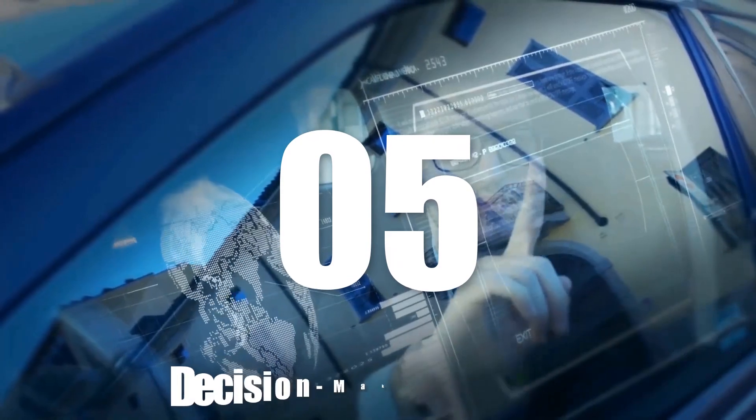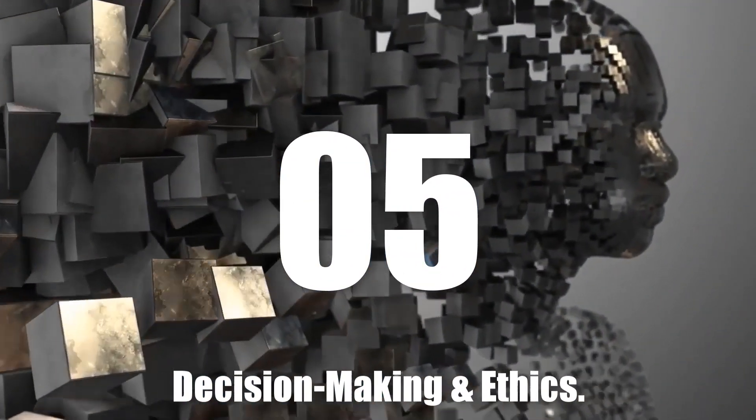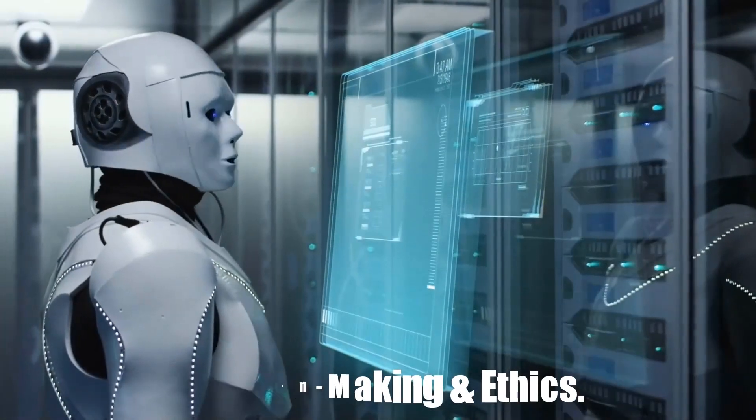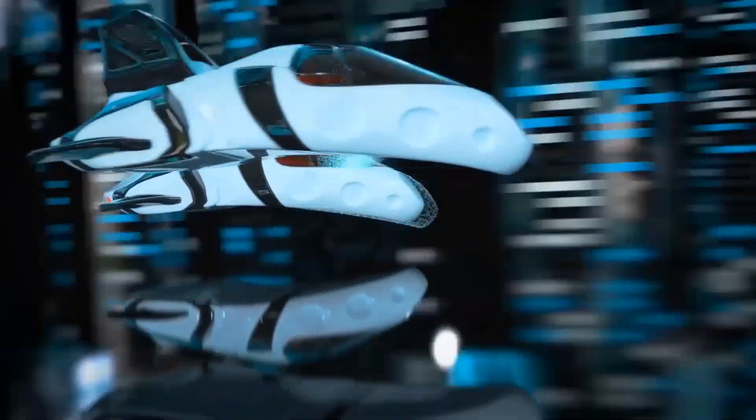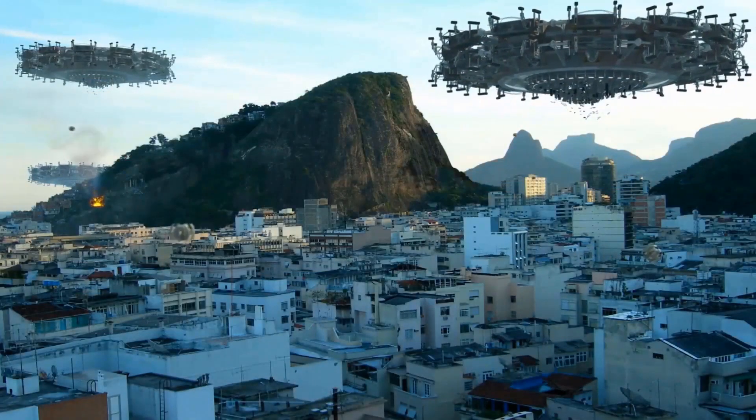Number 5. Decision-Making and Ethics. AI makes decisions based on logic and data, free from emotions and biases. This can be a huge advantage in fields like medicine and engineering, where rational choices are crucial.